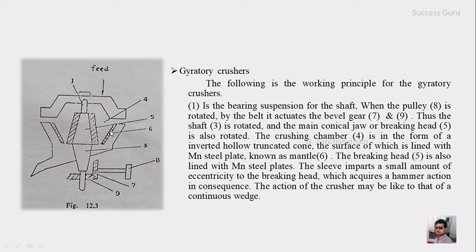The breaking head, number 5, is also lined with Mn steel plates. The sleeve imparts a small amount of eccentricity to the breaking head, which produces a hammer action in consequence. This action of crushing may be likened to that of a continuous wedge.